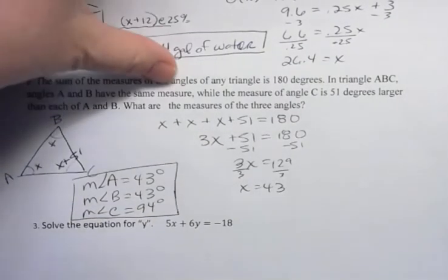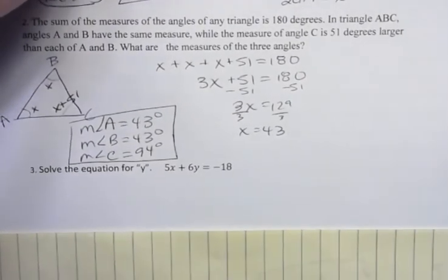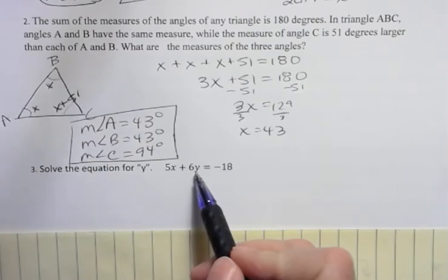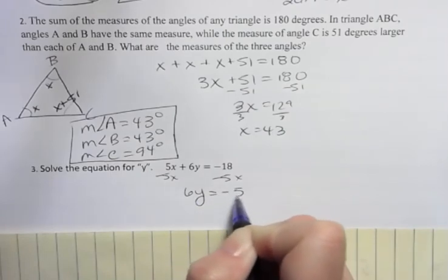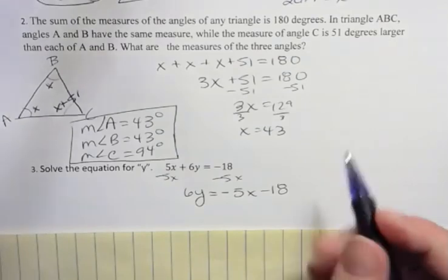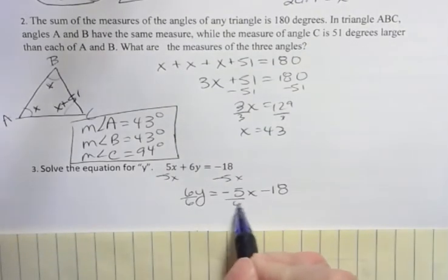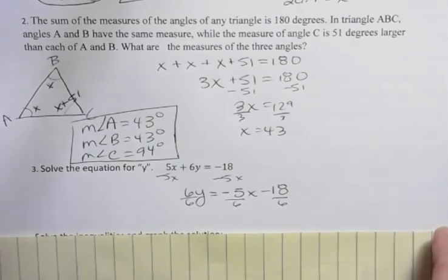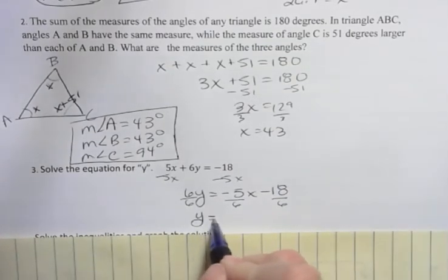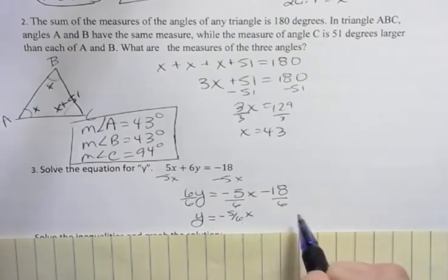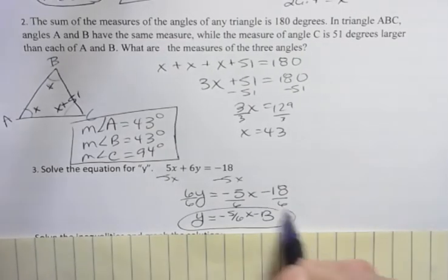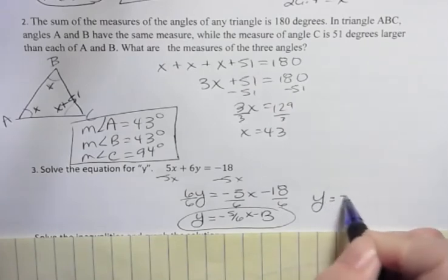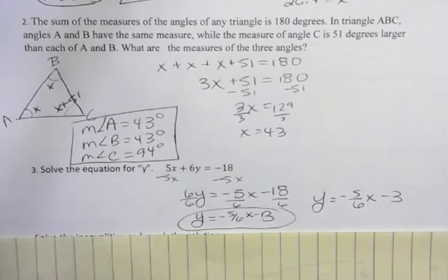All right, another problem they'll ask you to solve an equation, in this case solve for Y. If we solve for Y, all we're doing is trying to get Y by itself. So we want to get rid of the X term. 6Y is equal to negative 5X minus 18. We usually put the X term first. And then we want to get Y by itself. So we're going to divide everything by 6. Notice how I did those three terms separately. That's a nice way to write that. That gives me Y equals negative 5/6X. Negative 18 divided by 6 is negative 3. I wrote that kind of funny. So the final answer is Y is negative 5/6X minus 3.